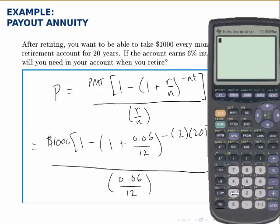So I'll start with the innermost parentheses again: 1 plus 0.06 divided by 12. I want to raise this to the negative 12 times 20 power. So in parentheses I put negative, I don't use the minus key, I use the negative button, 12 times 20 or negative 240.